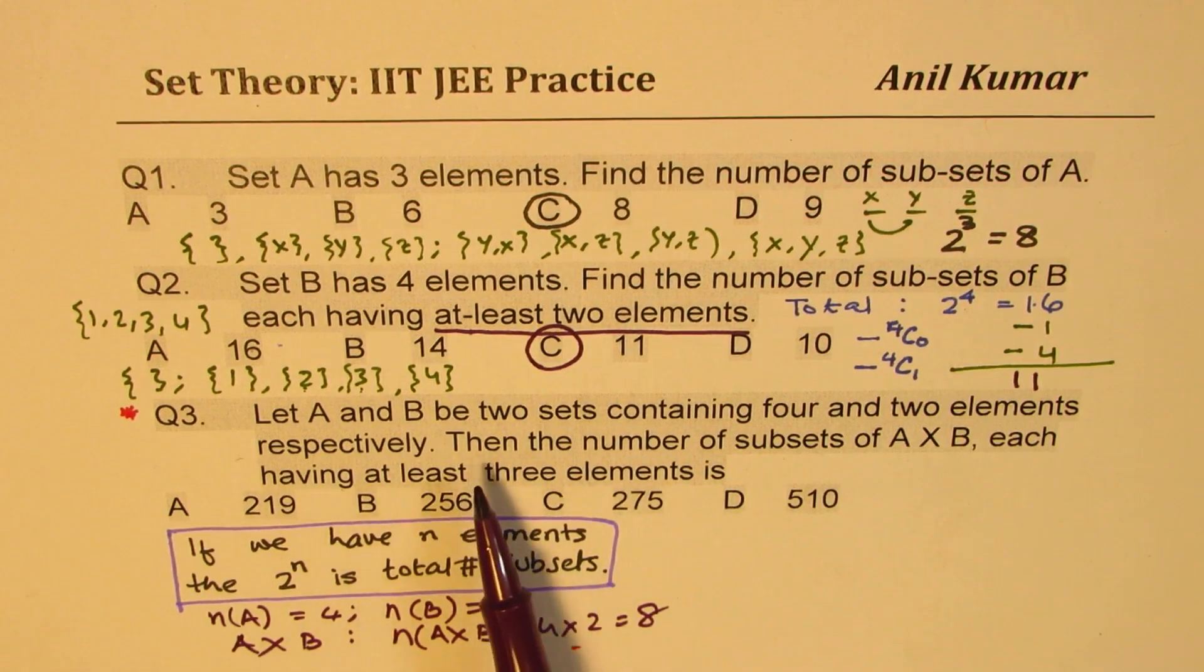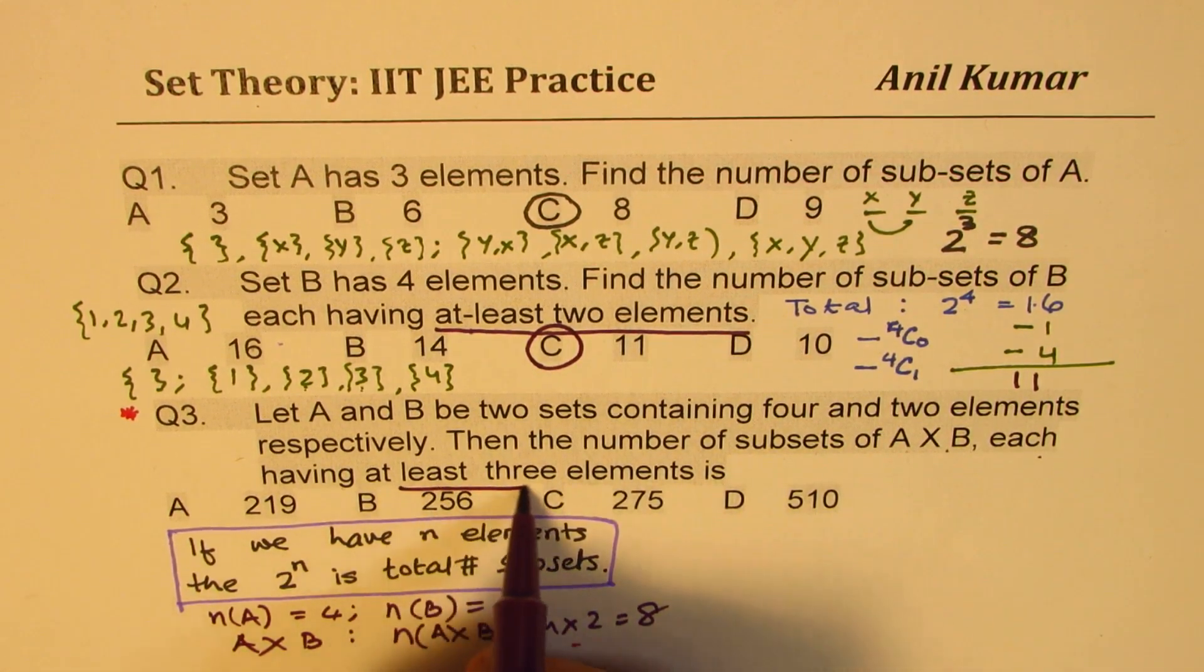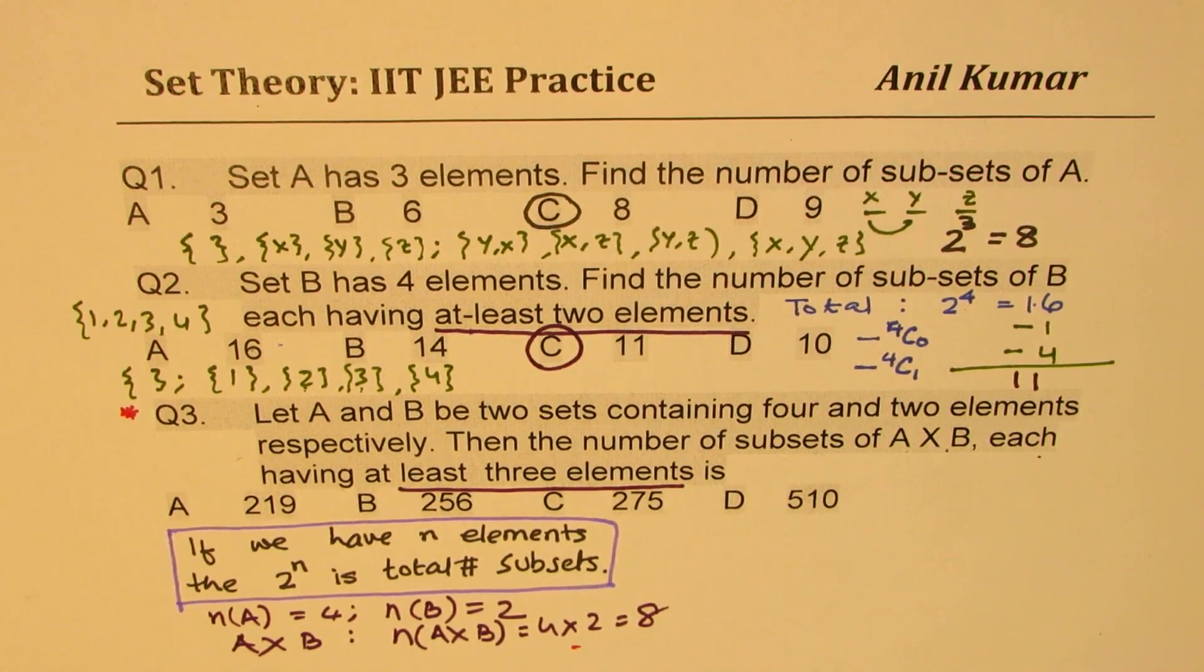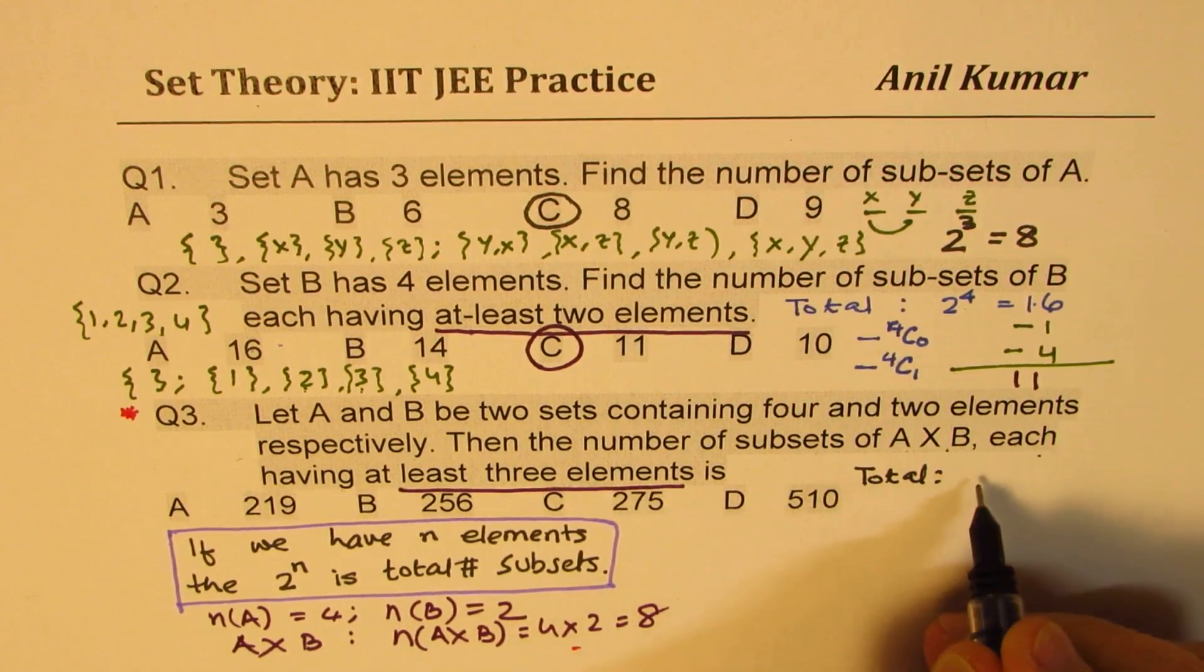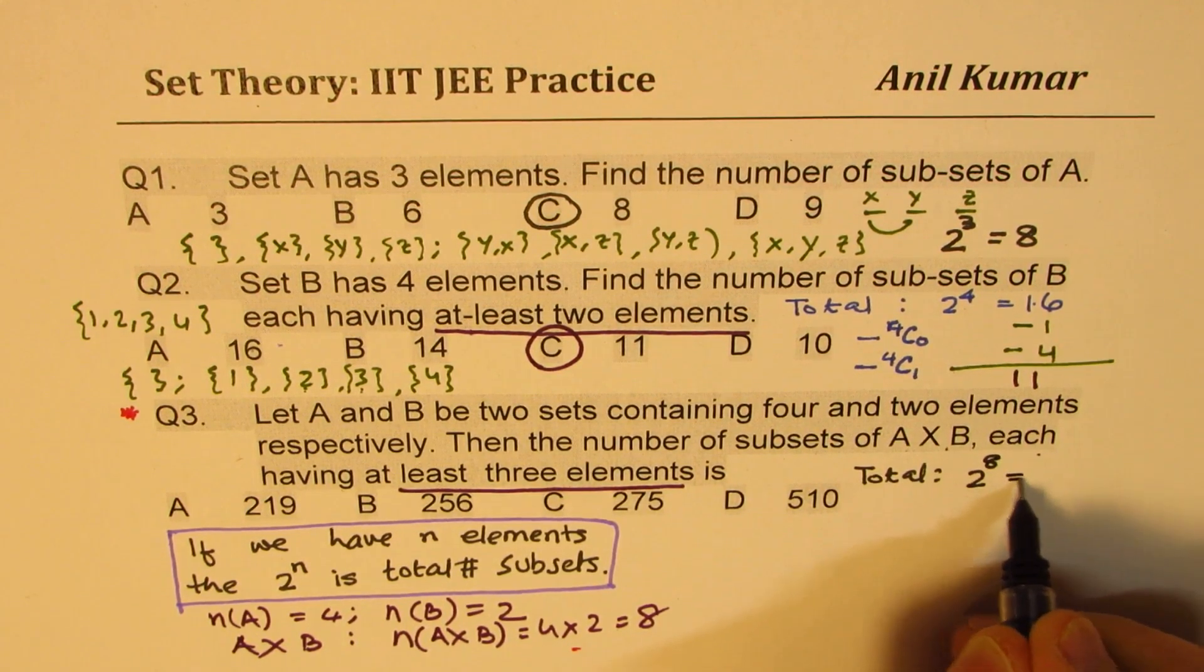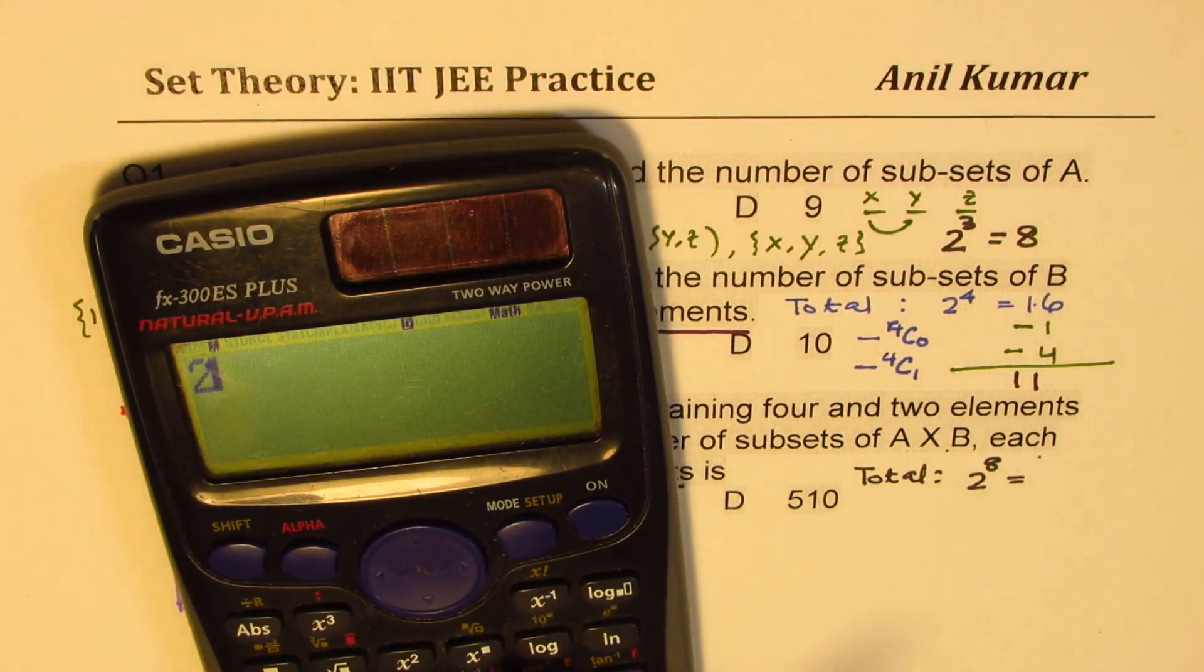Second half of this question is, then the number of subsets of A cross B, each having at least three elements, is how much. Each having at least three elements. So we have eight in all. So in this case, what is the total? Total in this case is 2 to the power of 8, which is how much? Which is 256. Two to the power of 8, you could also calculate. So 2 to the power of 8 is equal to 256.